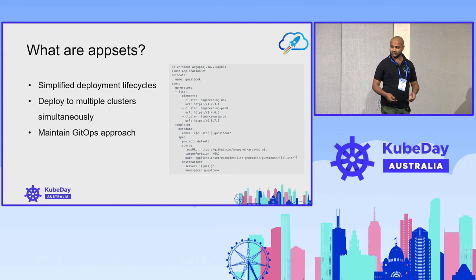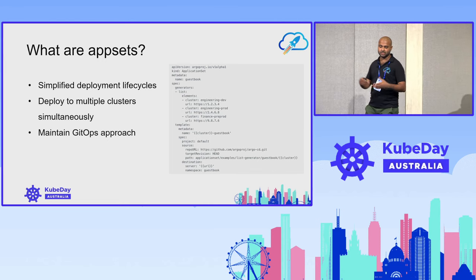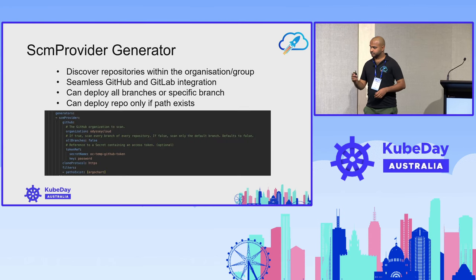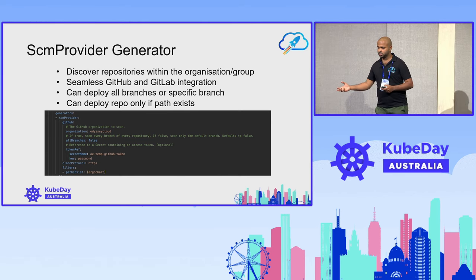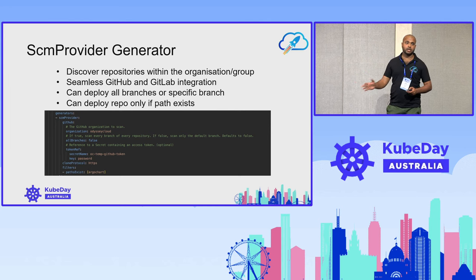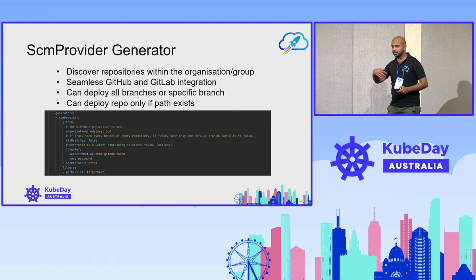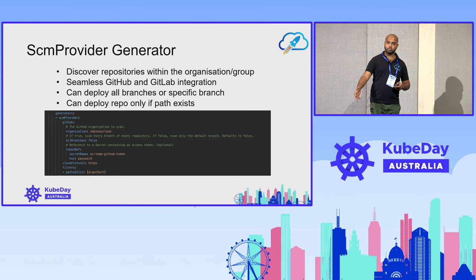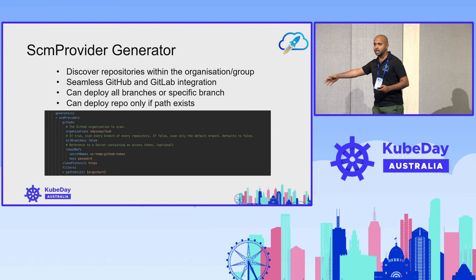So what are AppSets? App sets simplify your deployment life cycles. You can deploy to multiple clusters simultaneously while continuing to maintain your GitOps approach. The main part of application sets is you have things called generators. The first is an SCM provider generator — it scans your entire GitHub or GitLab organization, including subgroups and child projects. You can use something called paths exist, which only searches for a specific folder, and if that folder exists, it automatically performs a GitOps deployment.